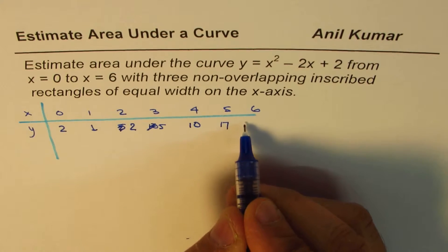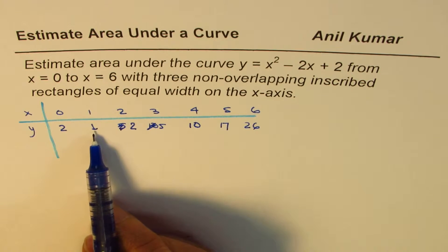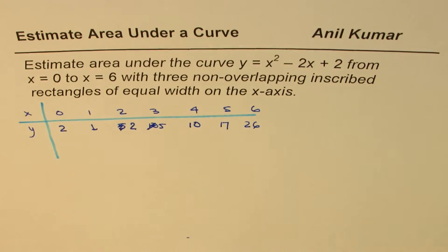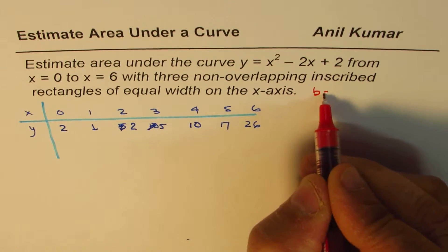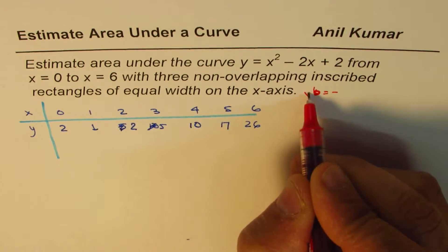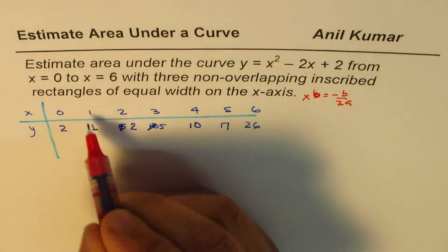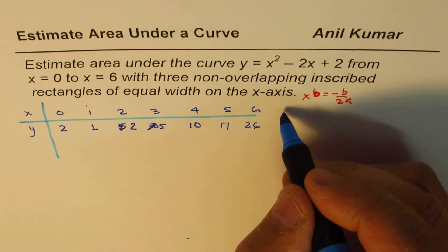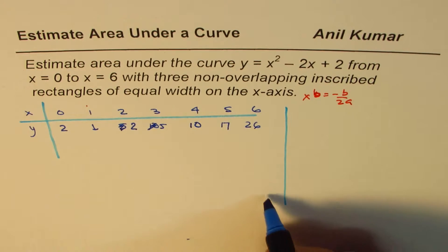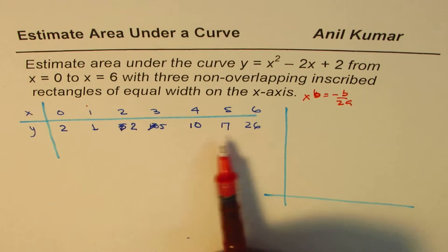So we get 26 for 6. We have a parabola which seems to have a vertex at 1, which is very clear from here also. You could find vertex using completing the squares or x equals to minus b by 2a will give you the vertex. So that is the vertex for us. With these values, let me sketch the parabola approximately.